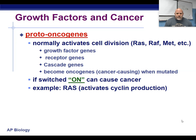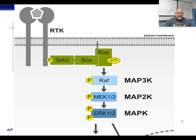Cancer happens when we lose control of our cell division process. The first stage of losing control is we usually have a mutation in one of the what are called proto-oncogenes. These are genes that are normally involved in the normal signaling of mitosis. Normally we get a growth factor that binds to a receptor and it starts a cascade that signals to the cell that it's time to divide.